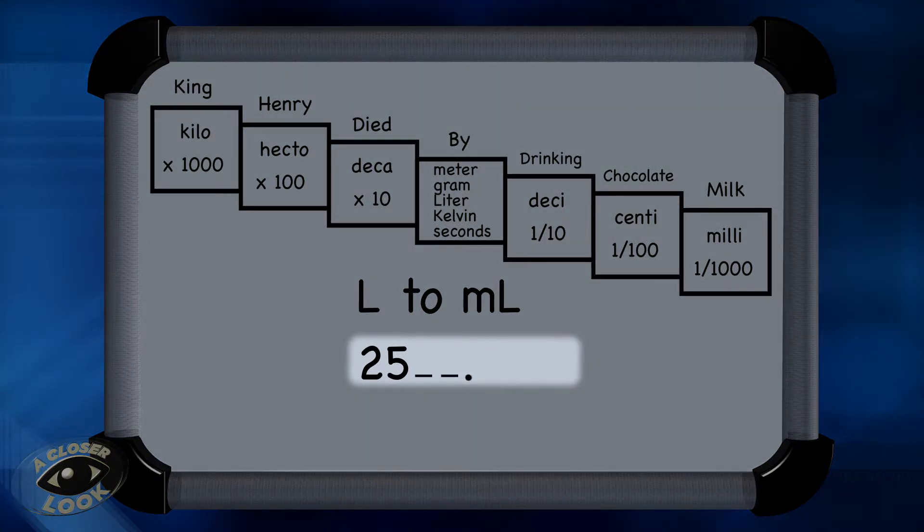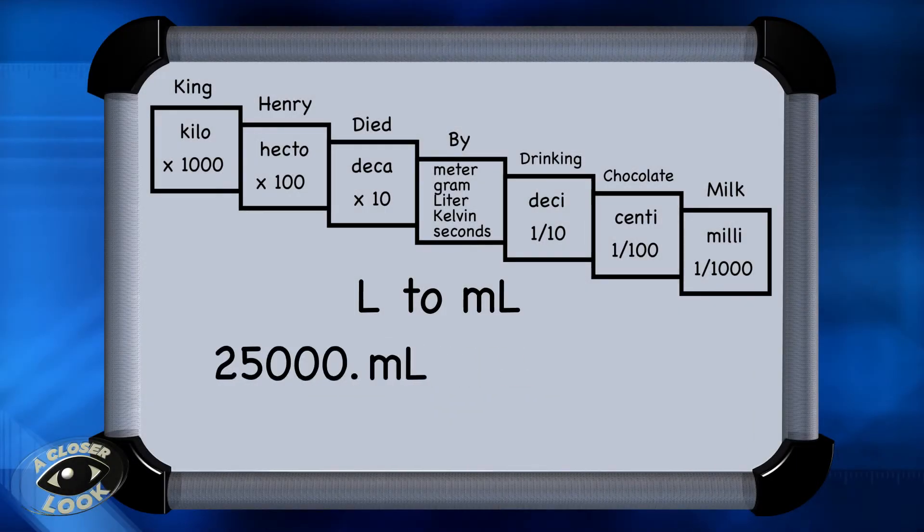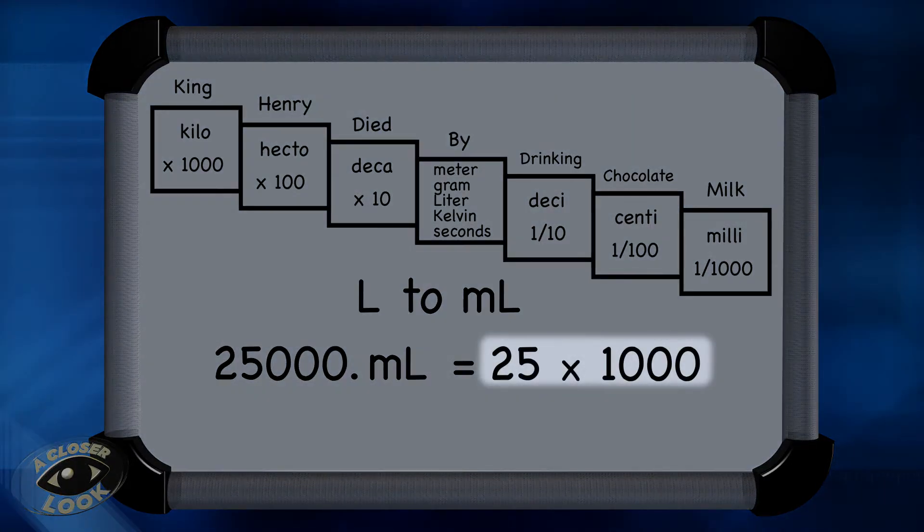So here we move it one, two, three, and that's where the new decimal point goes. We fill in the dips with zeros, and we end up with 25,000 milliliters. You could have also found this number by multiplying 25 by 1,000.